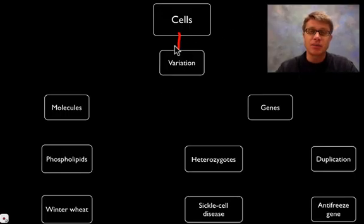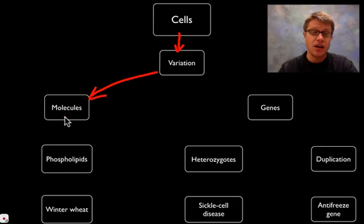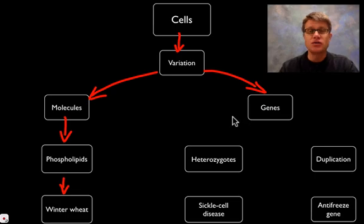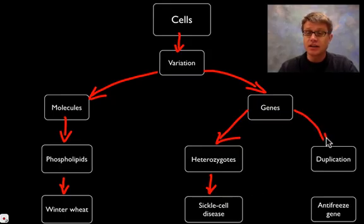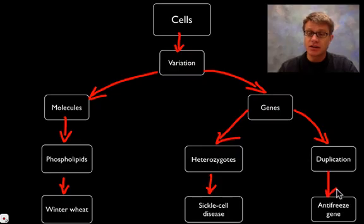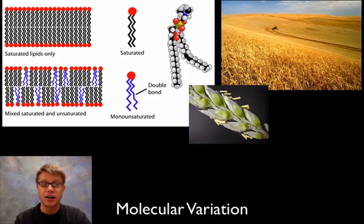Basically I'm going to talk about how variation in the molecules of cells can increase their success. The first example I'll talk about is phospholipids — a great example being winter wheat and how they can vary the amount of phospholipids. Then I'll talk about genes, and how variation in actual genes can give heterozygote advantage — the example being sickle cell disease. Finally, I'll talk about gene duplication and its importance in organisms, using the antifreeze gene found in organisms that live in really cold environments.